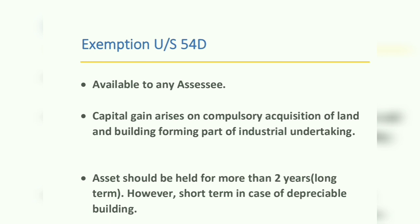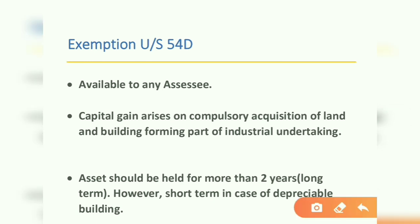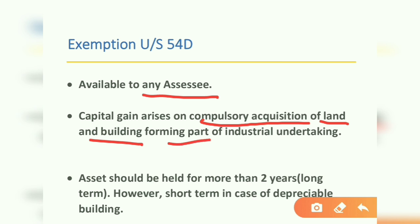Exemption under Section 54D is available to any assessee. Unlike Section 54 and 54B, which were available only to individuals and HUF, in this case it is available to any assessee — whether it is a company, firm, individual, or HUF.